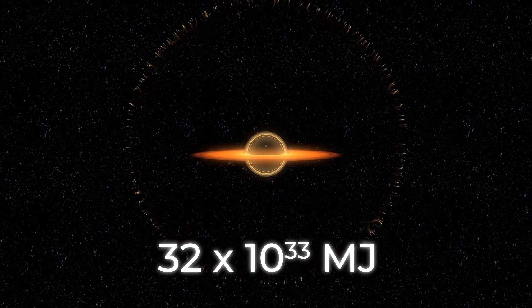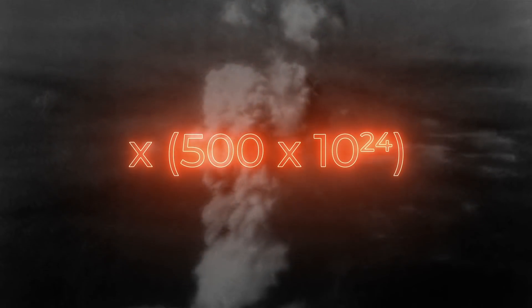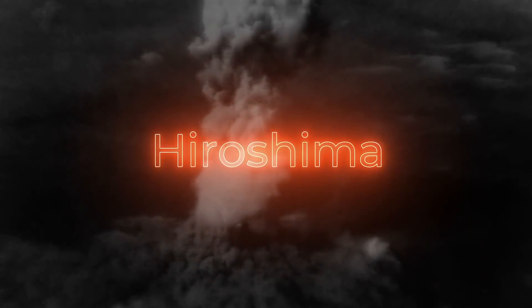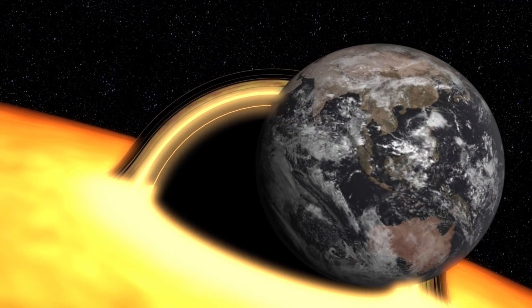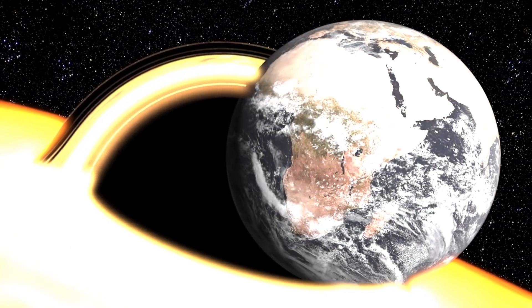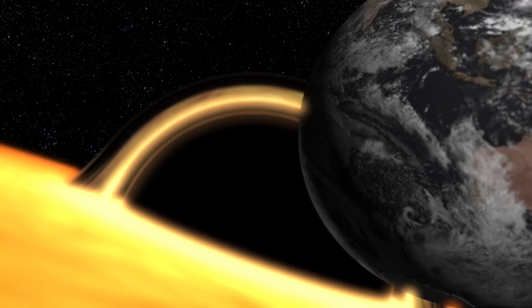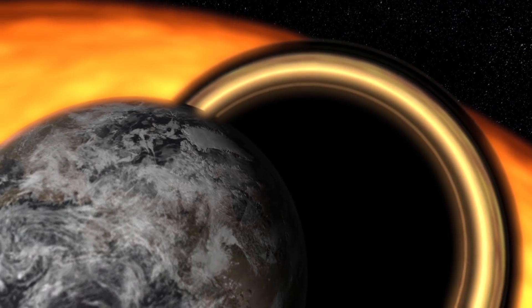If the Earth collided with a black hole with a mass of 66 billion masses of the sun, a huge amount of energy would be released. According to scientists, it's about 32 decillion megajoules of energy, or 32 with 33 zeros. This power is equivalent to 500 septillion of the bombs that were dropped on Hiroshima. It's not difficult to imagine the fate of the Earth under such a bombardment—it would simply turn to ash.